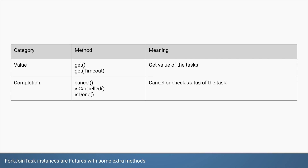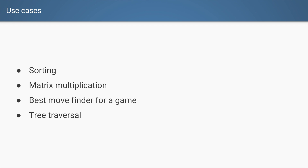Since ForkJoinTask extends Future, it has the same methods you'd expect — get to retrieve the task's value, cancel to cancel the task, and isCancelled or isDone to check status. Fork join pools are typically used for problems that require dividing a problem into multiple subproblems and solving them effectively — such as sorting, matrix multiplication, best-move finders for games, or tree traversal. If you want me to cover any specific aspects of fork join pool, let me know in the comments. Thanks for listening!